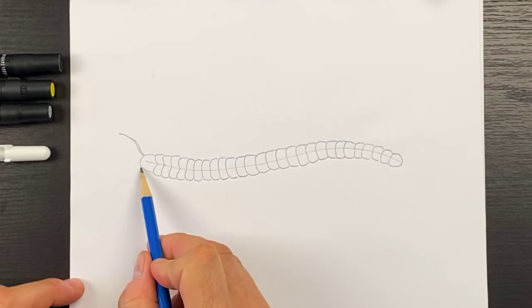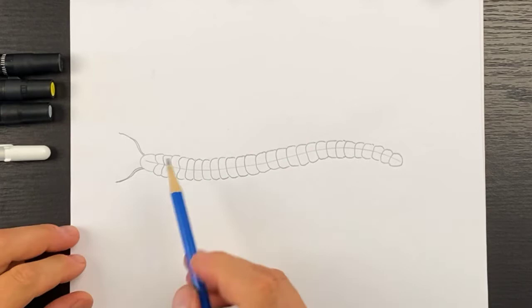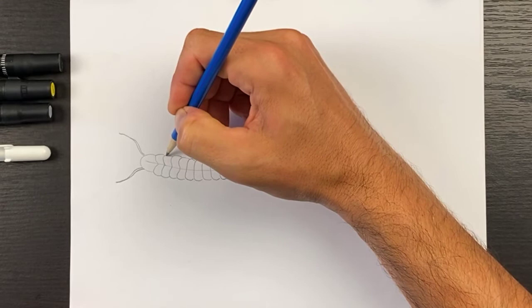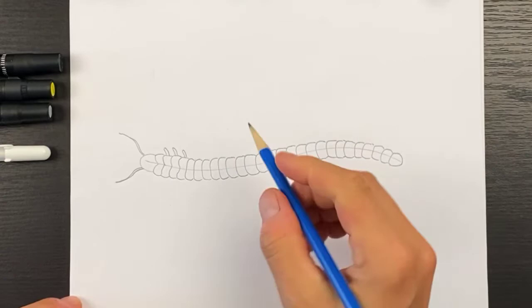Okay, so for the head here we'll draw a couple antennae. So one will be off to this side here, and then one will be down this way like that.